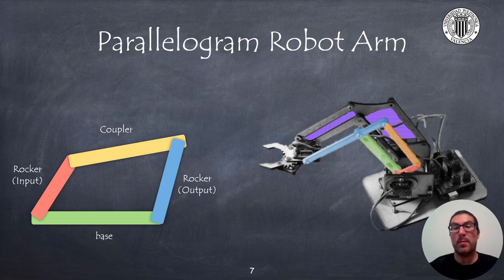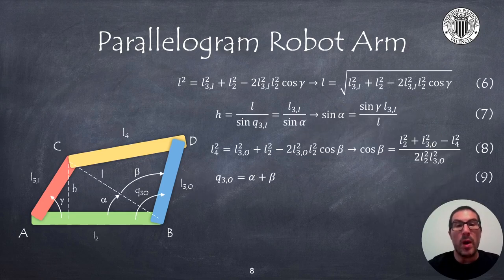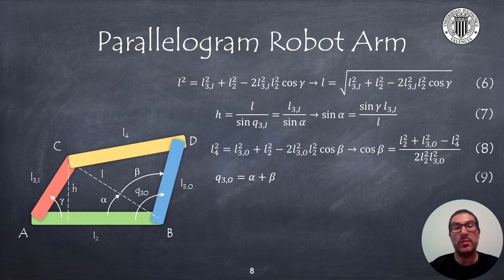In green, we have link 2 of a typical robot arm. For the moment, we will assume that it is a fixed bar. In red, I have colored the input link 3, that is connected to the servo motor that indirectly moves the output link 3, colored in blue. The orange bar is the actual coupler. Once the elements of the four linkage mechanism are known, we can derive the relationship between the input and output angles with simple trigonometric rules.